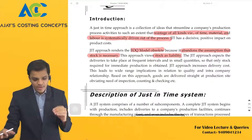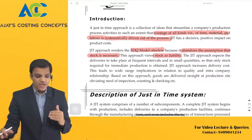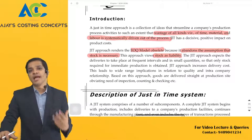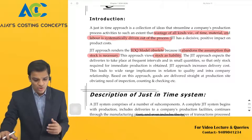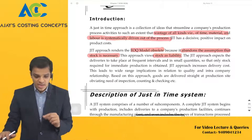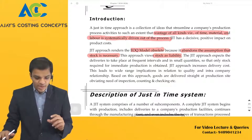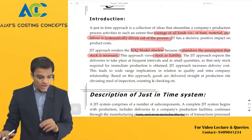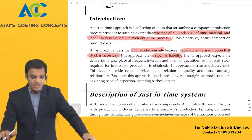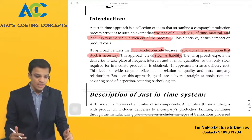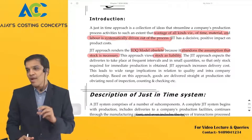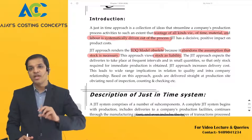If I am supposed to save costs, why not save them by following just-in-time rather than maintaining stock? The moment you maintain stock, there is wastage of time, material, and labor — storage cost and all those. Just-in-time expects delivery to take place at frequent intervals in small quantities, so that only stock required for immediate production is obtained. There is no minimum level or maximum level in just-in-time.